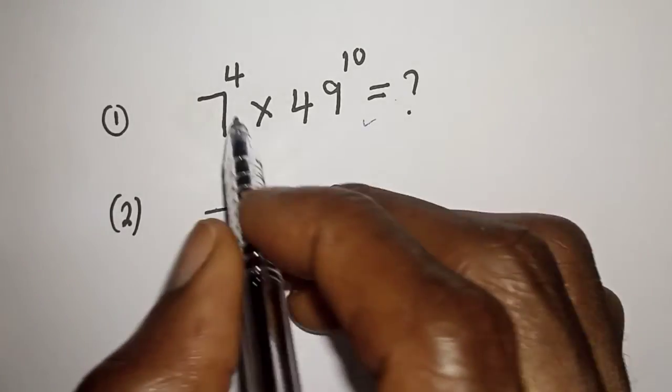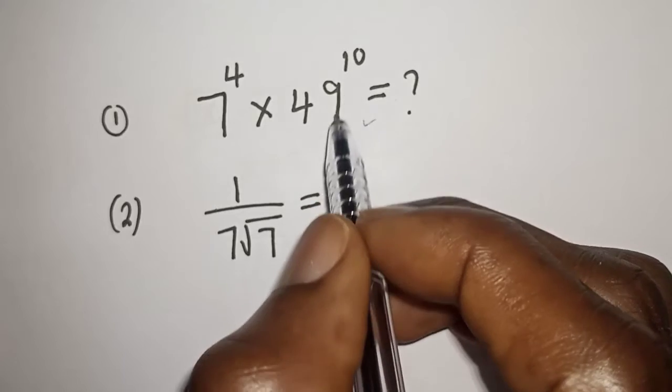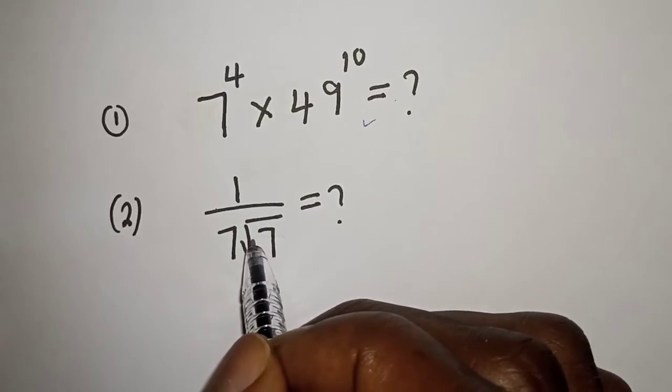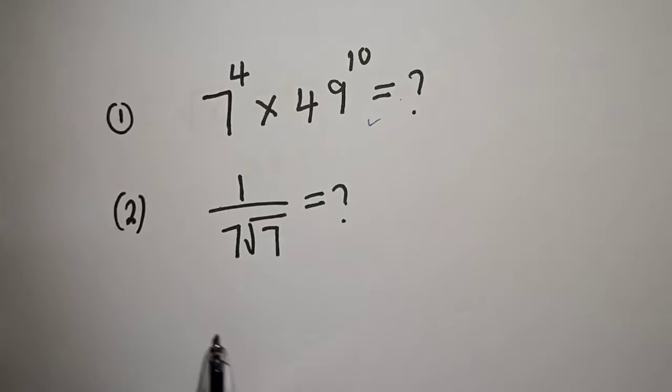The first one is 7 raised to power 4 multiplied by 49 raised to power 10. Then also the second one is 1 over 7 square root of 7 solution.